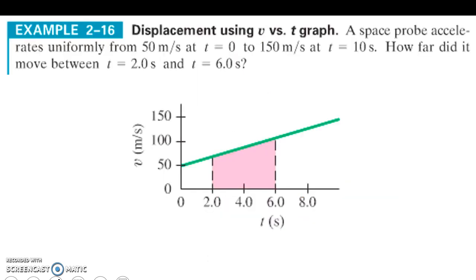So let's take a look here. We have a space probe traveling uniformly from 50 meters per second at time zero, so there's our point there, to 150 meters per second in 10 seconds. So that's here. How far did it move between the 2 and 6 second time frame? Well, all we want to do is use area under the curve to find that out.